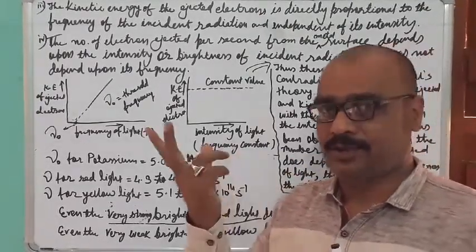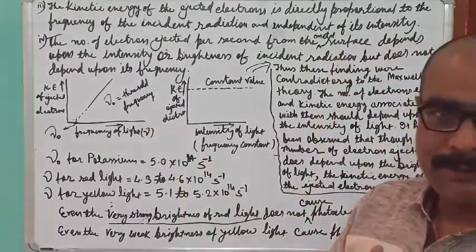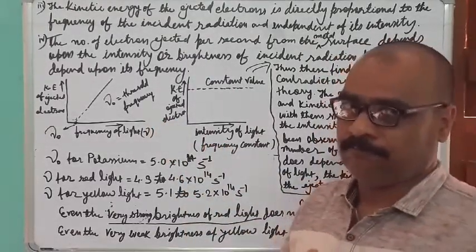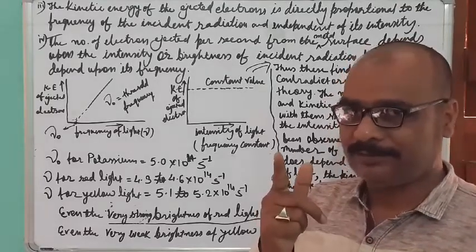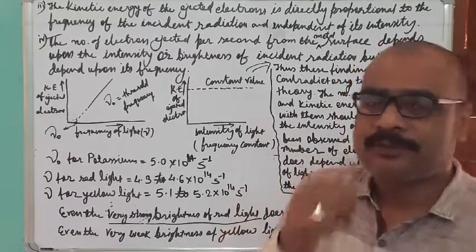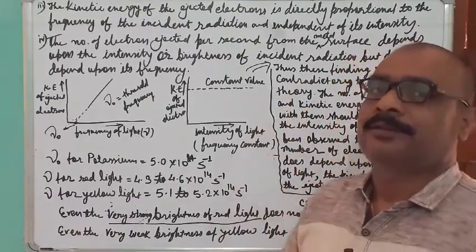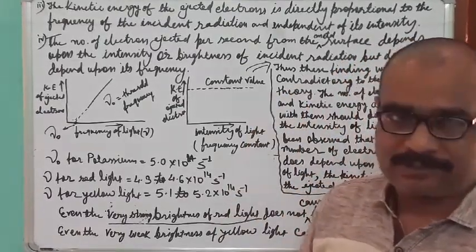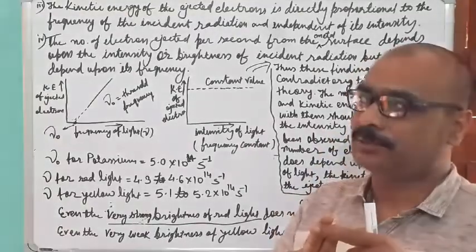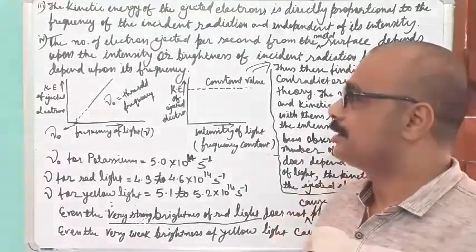More than the threshold frequency will produce more kinetic energy. So kinetic energy depends upon frequency, not upon intensity or brightness. But the number of electrons ejected depends upon the intensity of light. This is the key difference.